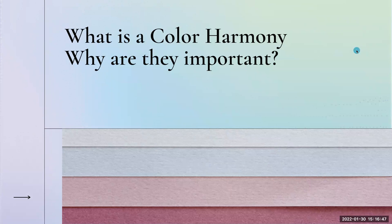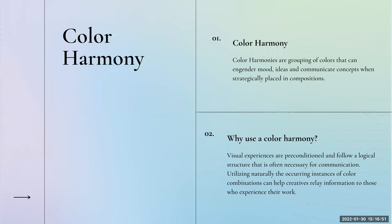What is a color harmony and why are they important? Color harmonies are groupings of colors that can engender mood, ideas, and communicate concepts when strategically placed in compositions. Visual experiences are preconditioned and follow a logical structure that is often necessary for communication. Using naturally occurring instances of color combinations can help creatives relay information to those who experience their work.